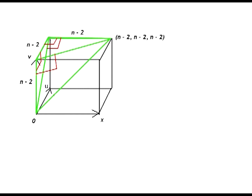The volume of the pyramid then is this area times the altitude length which is n minus two and divided by three. That gives us n minus two cube divided by six. It agrees with our earlier results.